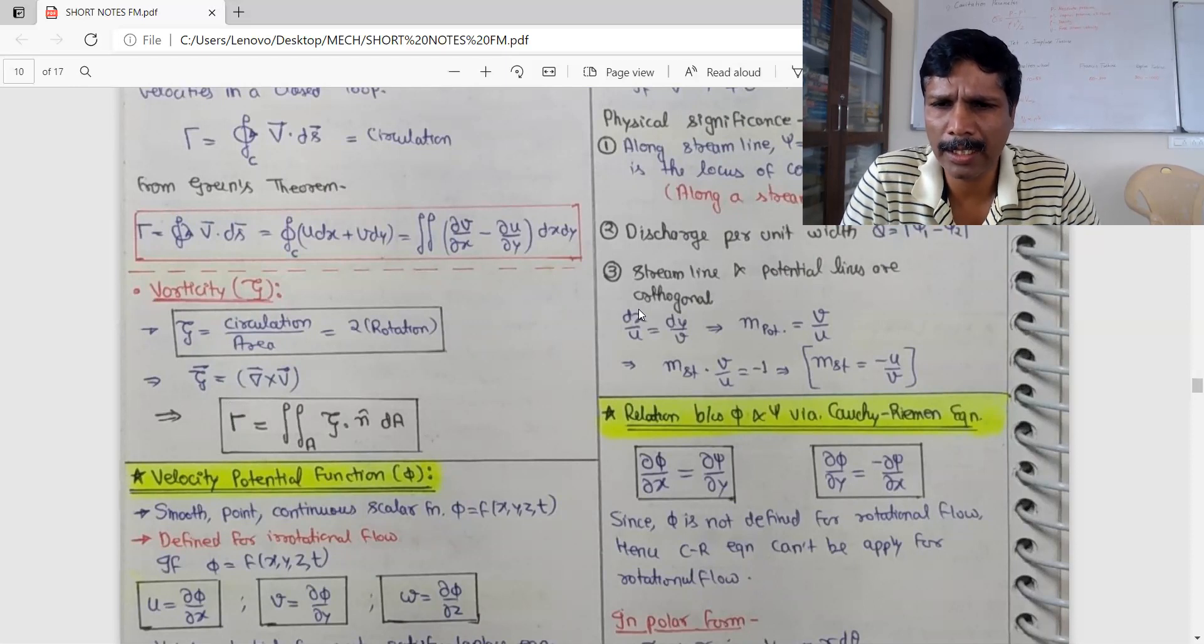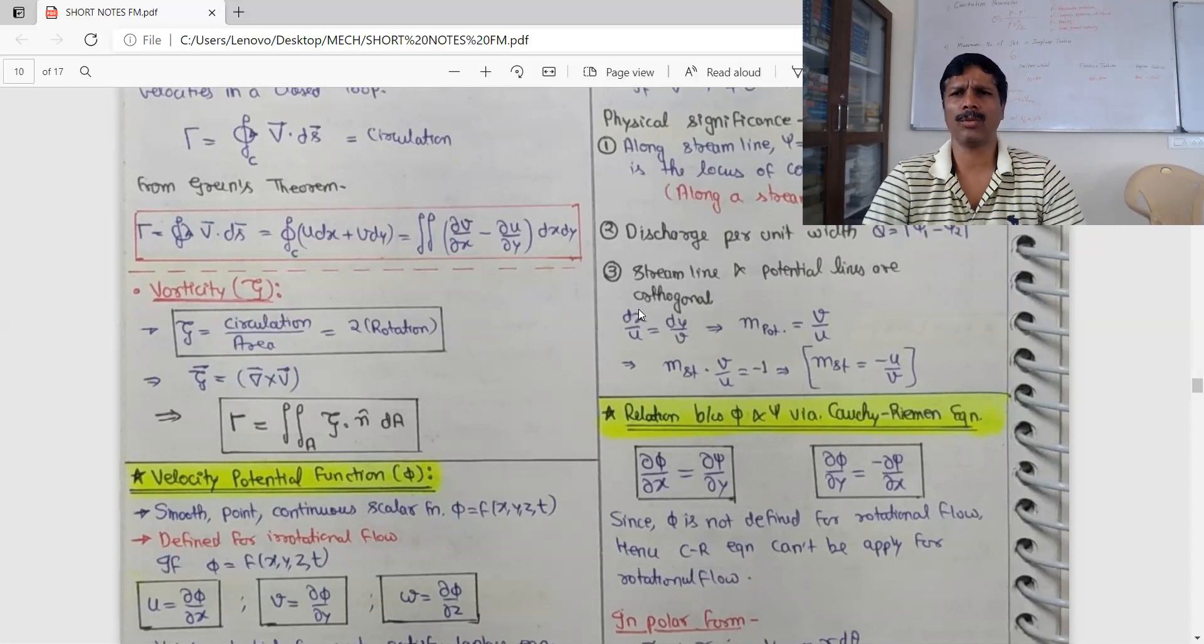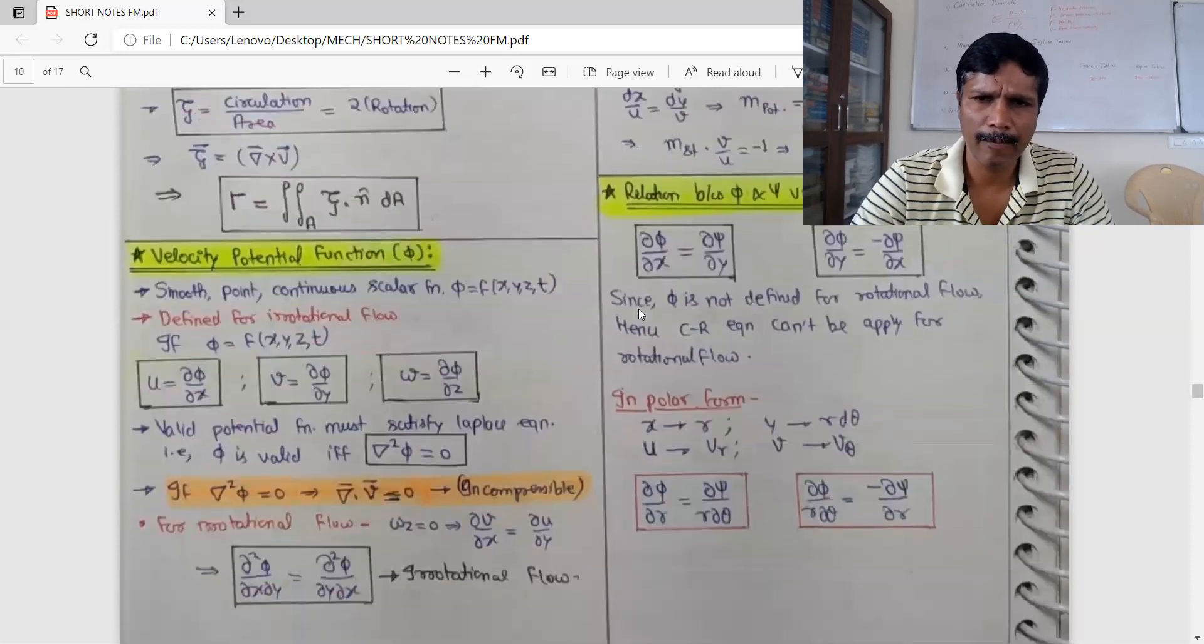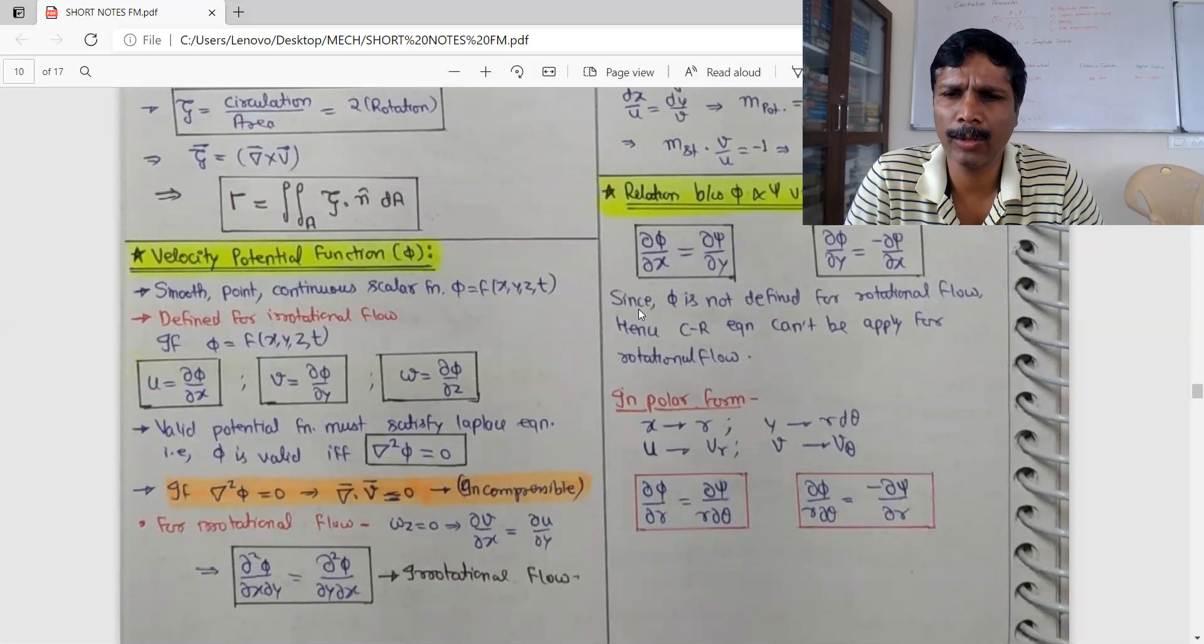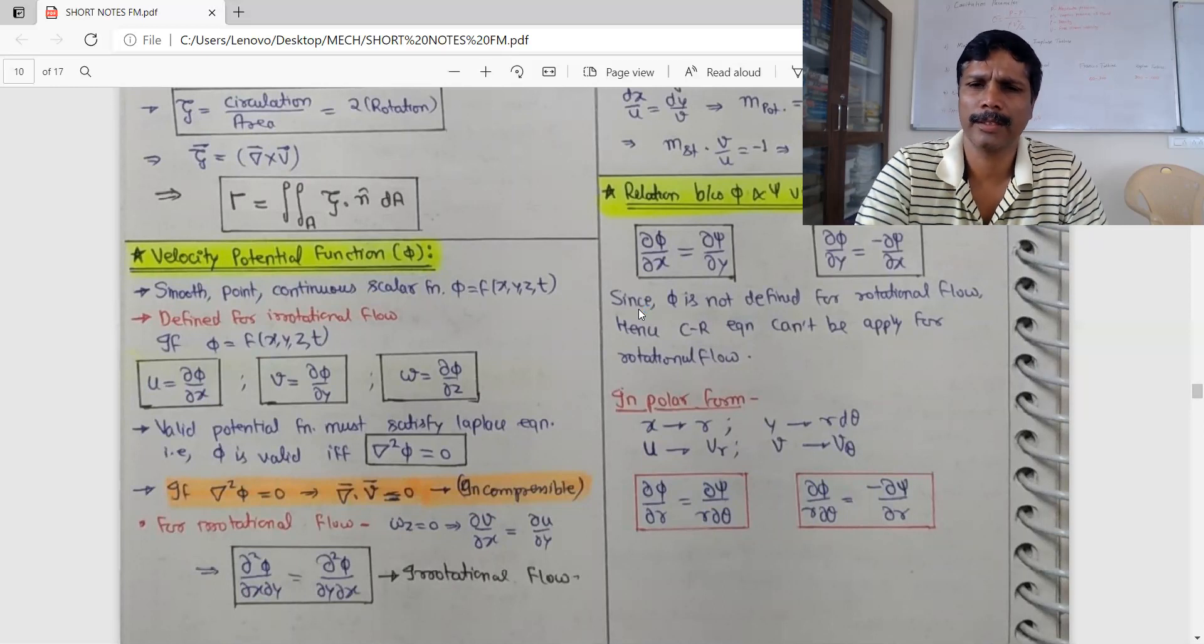For rotational flow pi is not applied. Polar form is d phi by dr equal to d psi by r d theta. This is d phi by r d theta equal to minus d psi by dr. d phi by r d theta equal to minus d psi by dr. This is polar formula.